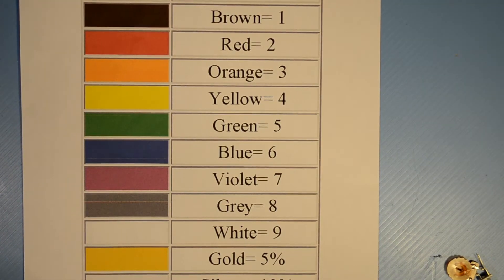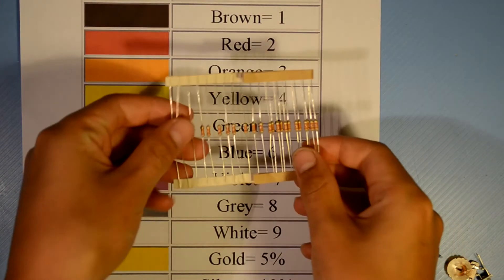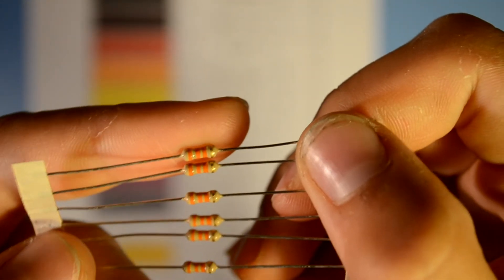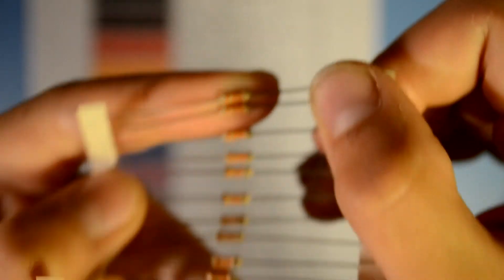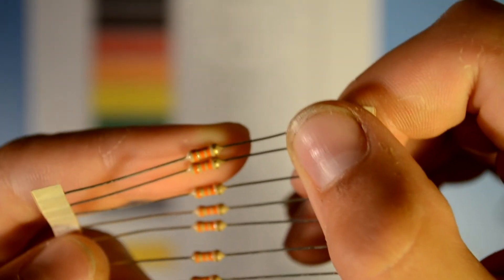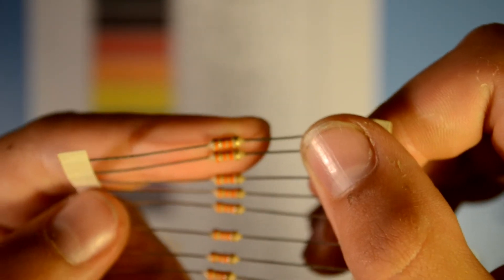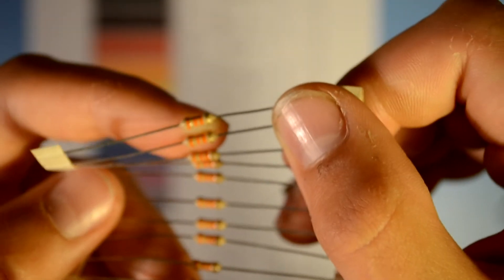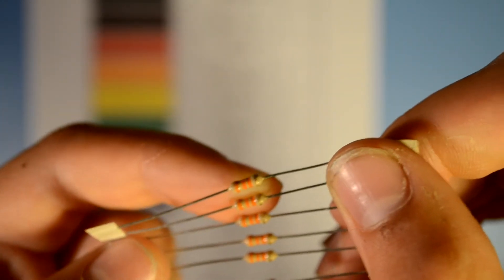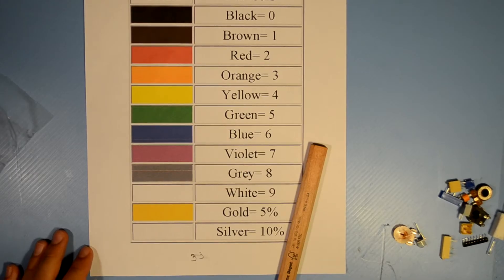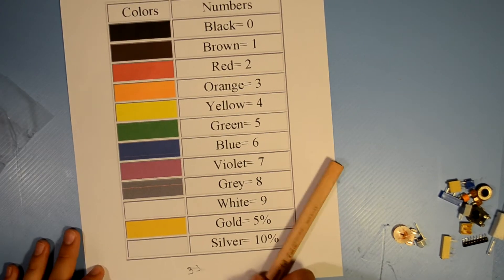Alright, the final part for resistors is determining the value. On resistors, most resistors at least, there's going to be four bands. And there's going to be three bands with a color. And then there is going to be one band that's either silver or gold. Most are gold. Alright, determining the resistor value is very simple.